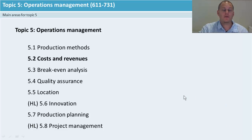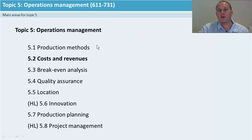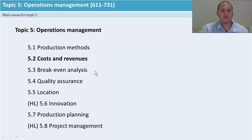Hi and welcome to 5.2 Costs and Revenues. This is part of Topic 5 Operations Management, going from 6.11 up to 7.31. This follows on from production methods where we looked at job, batch, mass, and flow. You use this to go into your breakeven analysis to work out your TFC, your TVC, and your contribution.